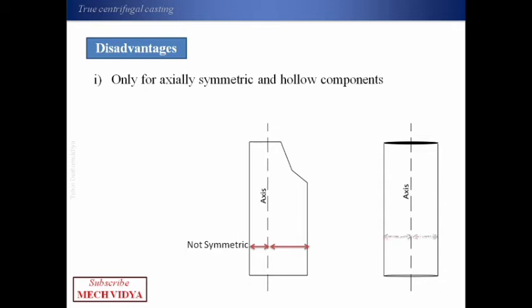Whereas in the second case, if we draw an axis, the axis divides the component equally and both halves are equal in shape and dimensions. These kind of components are called axially symmetric components. Usually only this kind of components, the axisymmetric components, can be produced using centrifugal casting.